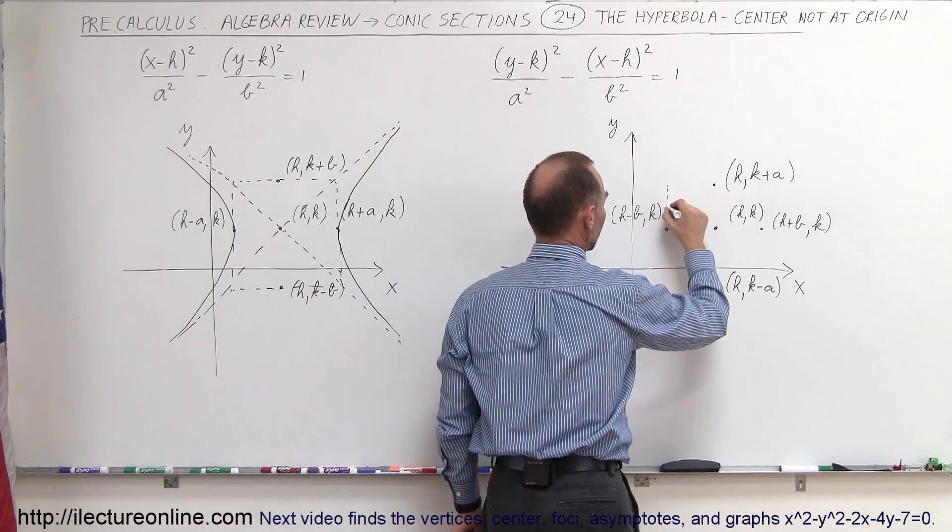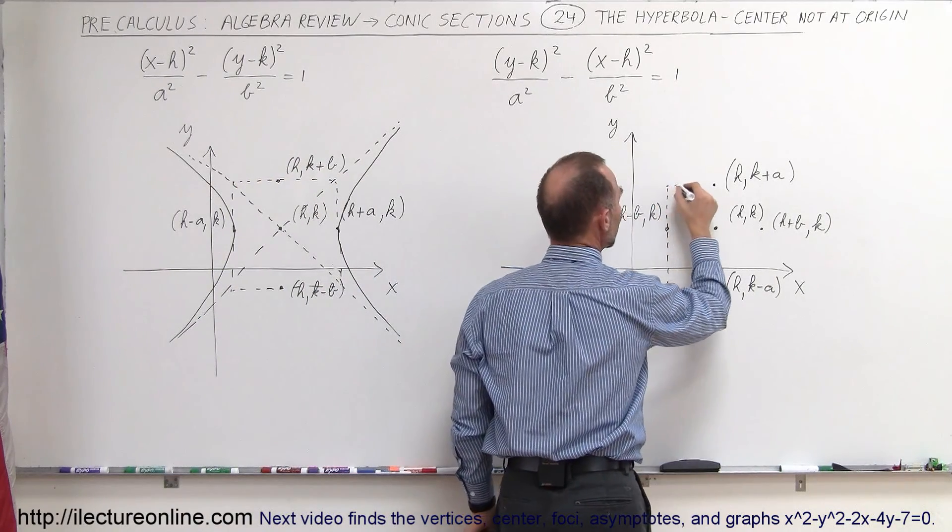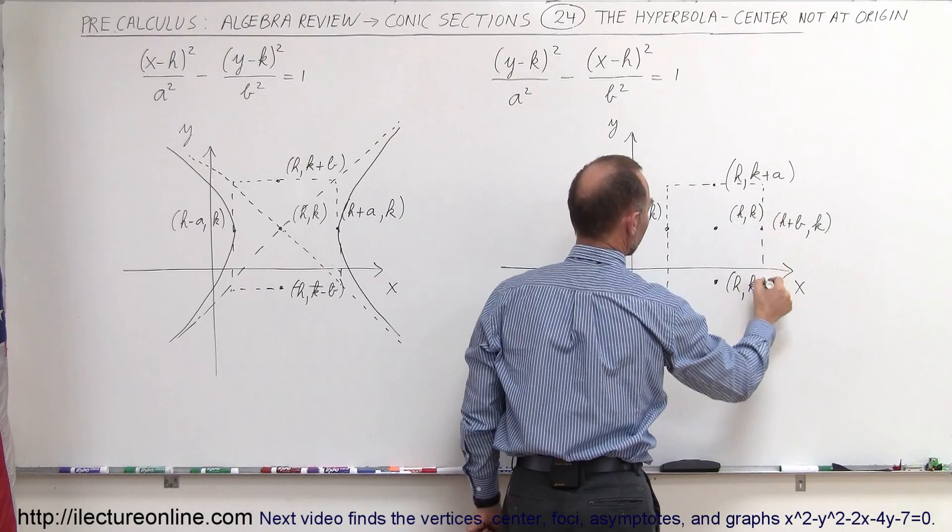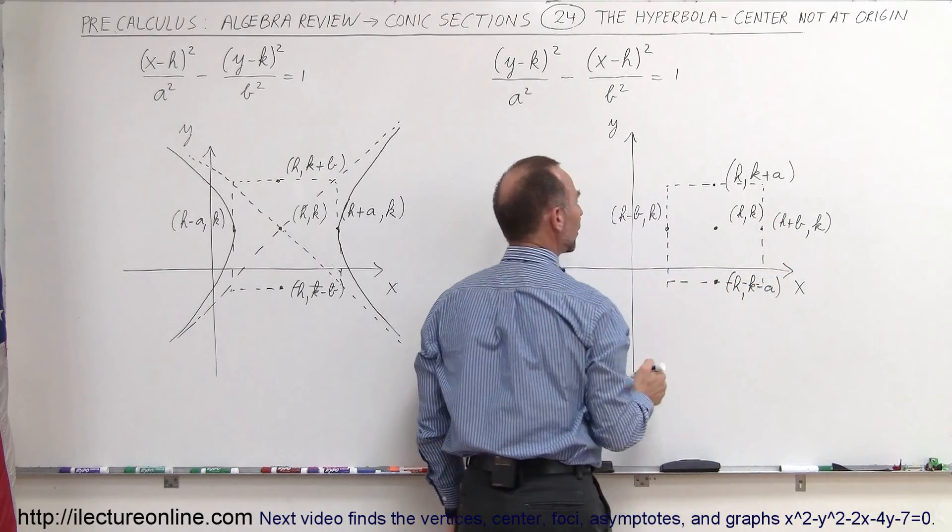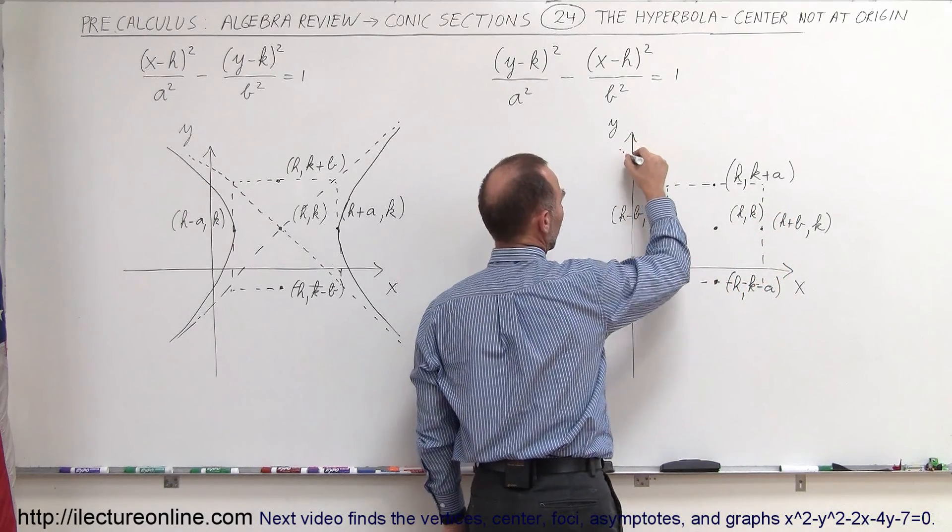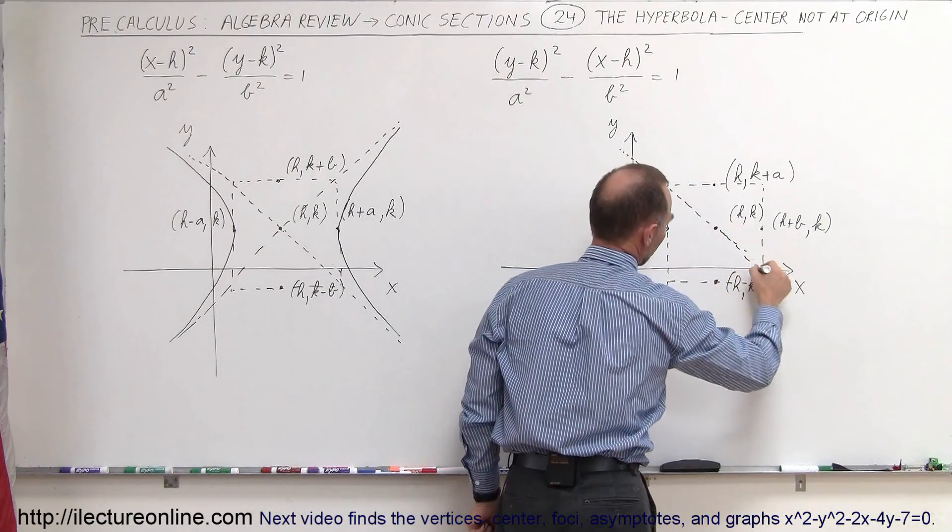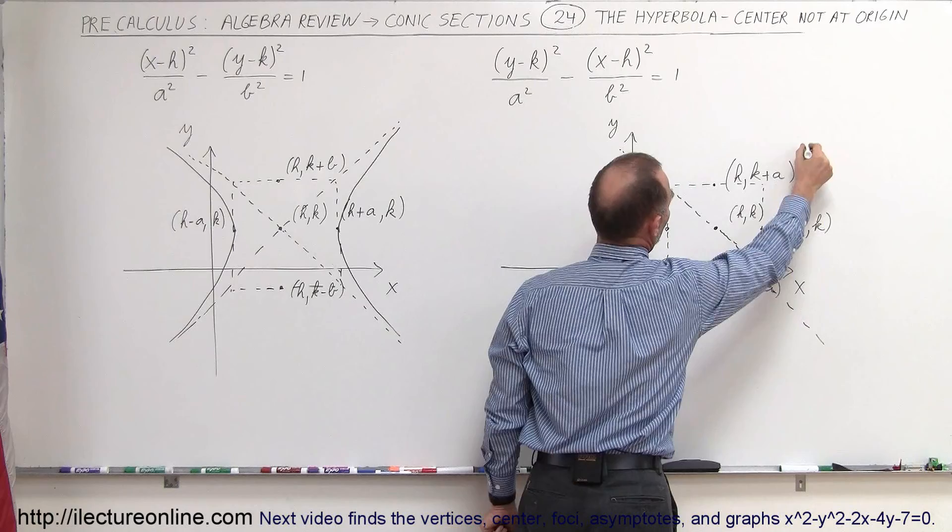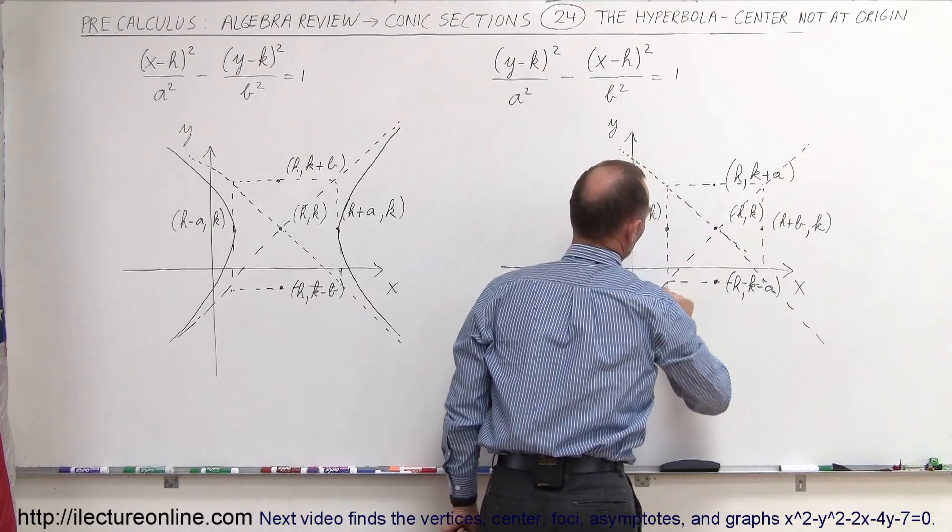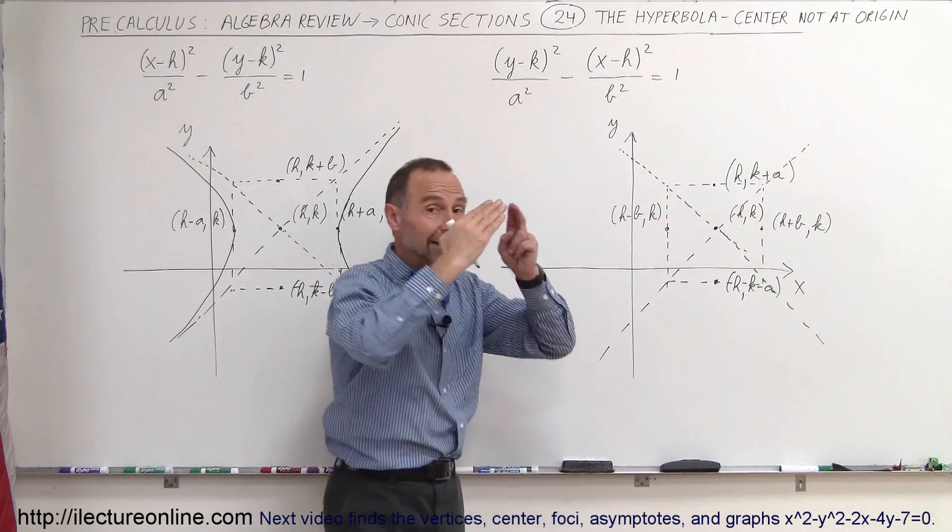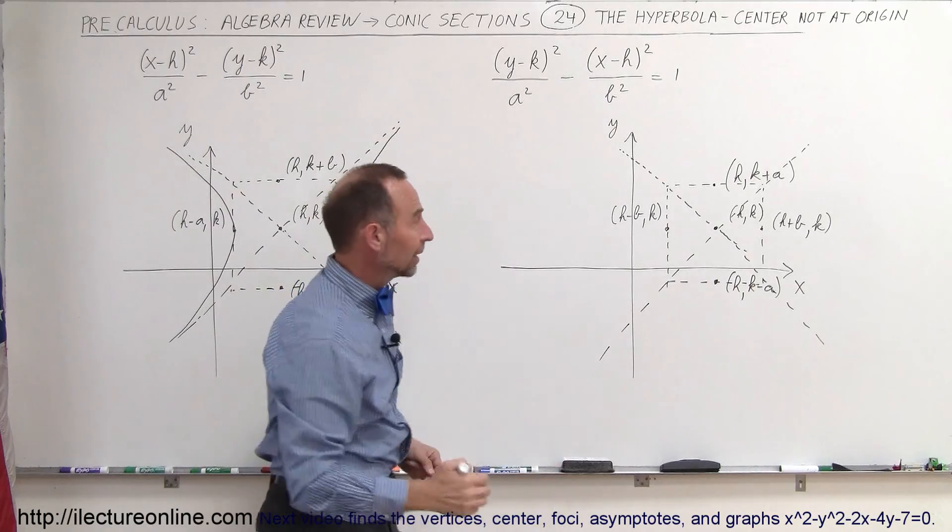All right. So now we draw our rectangle or square, whatever it may be. Most of the time it's a rectangle, like so. And now we go ahead and draw the lines from corner to the center to the other corner, like this, and over here to the corner, the center, and the corner this way.